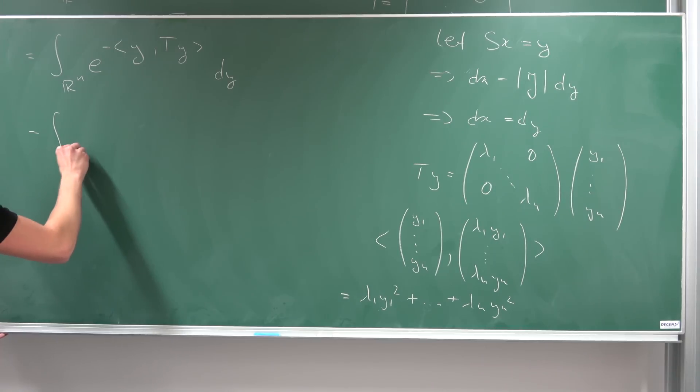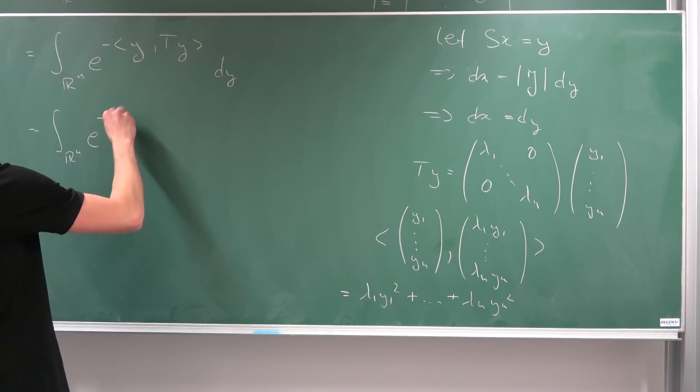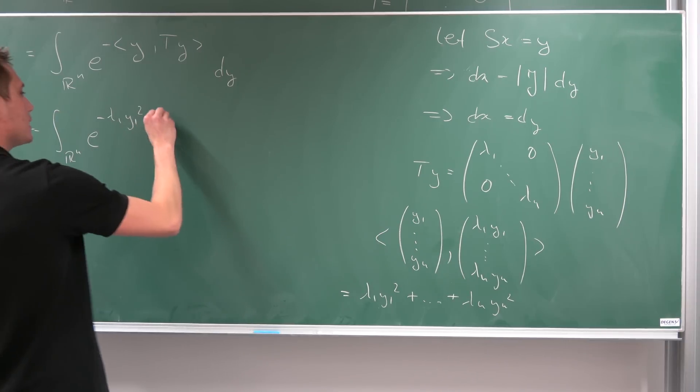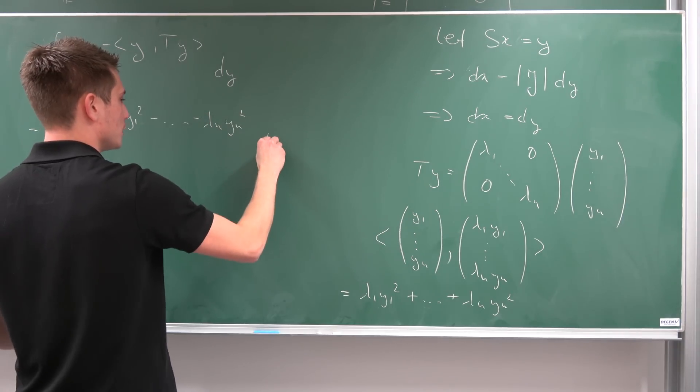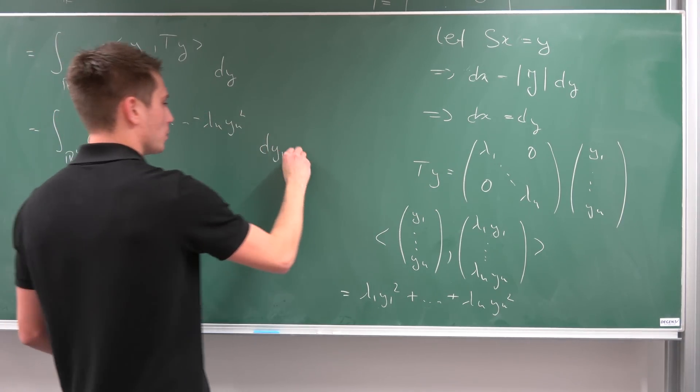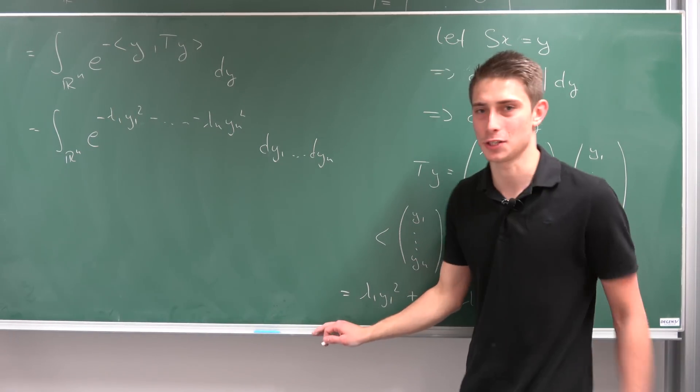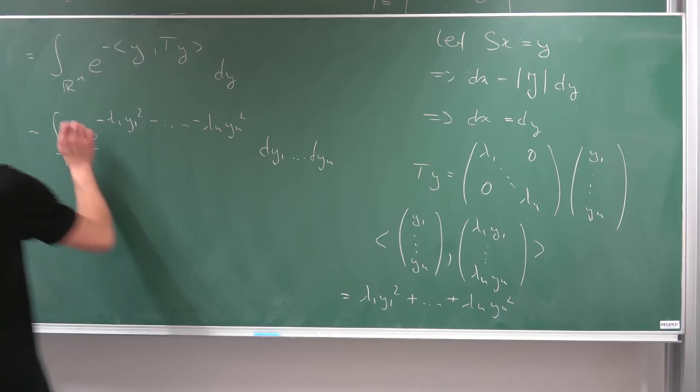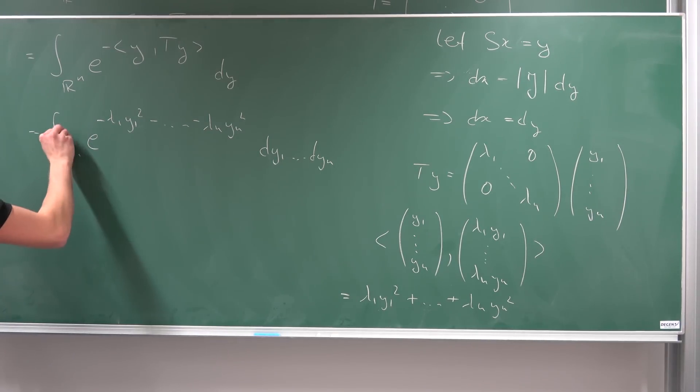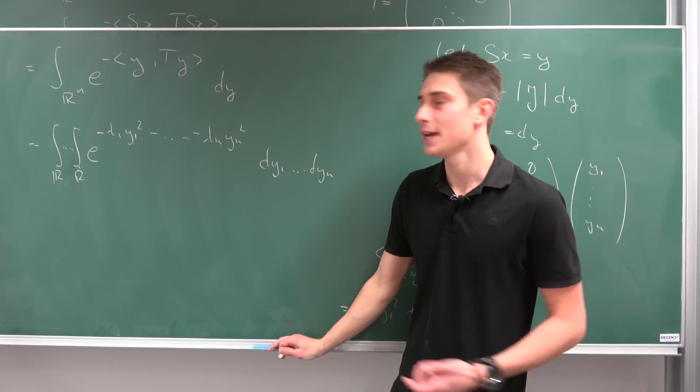So we are having an integral over r to the n, e to the negative, okay, now we have lambda 1, y1 squared, and then negative, lambda n, yn squared, dy1, until dy n. Those are a lot of integrals. And you see, this integral over r to the n is nothing but an integral over r, times an integral over r, n times, actually. And you see, we can use a certain theorem out of analysis.